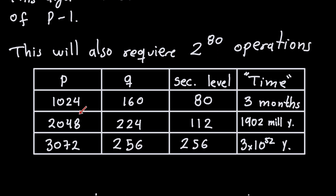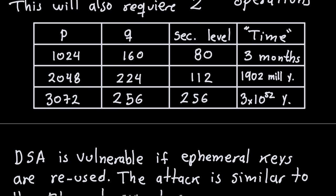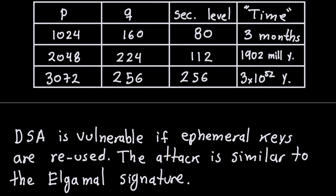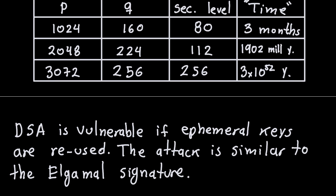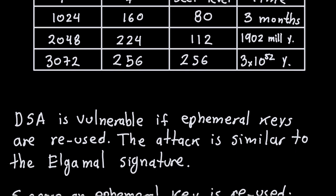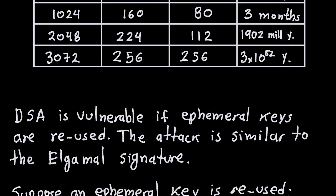The DSA is also vulnerable if ephemeral keys are reused. As discussed in the ElGamal signature algorithm videos, reusing the ephemeral key allows an attacker to recuperate the private key, which is very bad. The attack is similar to the ElGamal ephemeral key reuse attack, so I recommend reviewing that video as well.